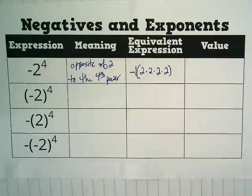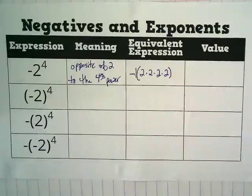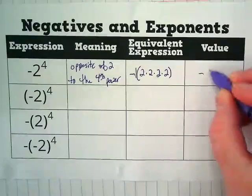What happens when we have parentheses, we do everything on the inside first. Remember order of operations, which we'll be reviewing in a second. So that means the value of this is going to be negative 16.